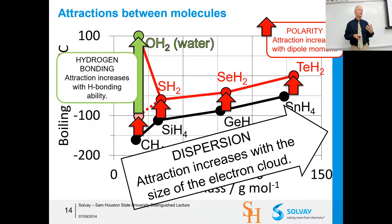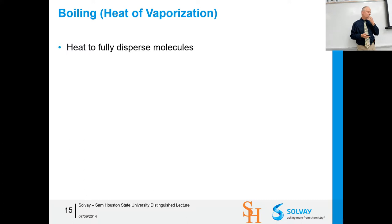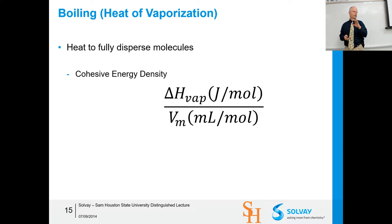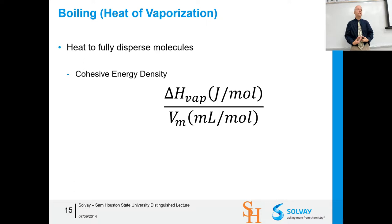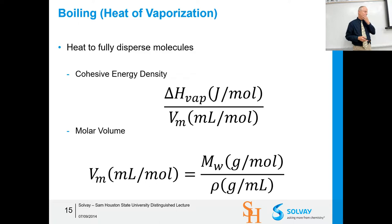To boil a liquid is to fully disperse those molecules. The cohesive energy density is the ΔH of vaporization — the energy you put in to get all molecules completely apart, as in the gas phase — divided by the molar volume, giving joules per mole divided by volume per mole. The cohesive energy density lets you classify substances based on their ΔH of vaporization per unit volume.